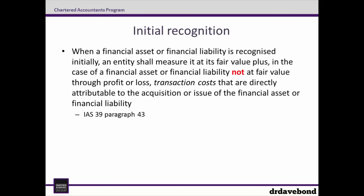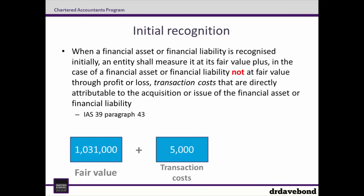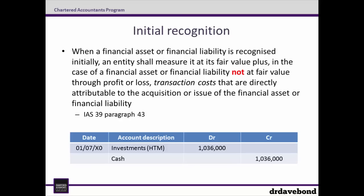The key word here is 'not'. Held-to-maturity investments are not the same category as financial assets or financial liabilities at fair value through profit or loss. As such, we do include the transaction costs into the initial measurement of the investment. There are two elements: the fair value of $1,031,000 and the $5,000 of transaction costs for acquiring the bond. This means the total initially recognized is $1,036,000. The entry is: debit Investments Held to Maturity $1,036,000 and credit Cash $1,036,000.